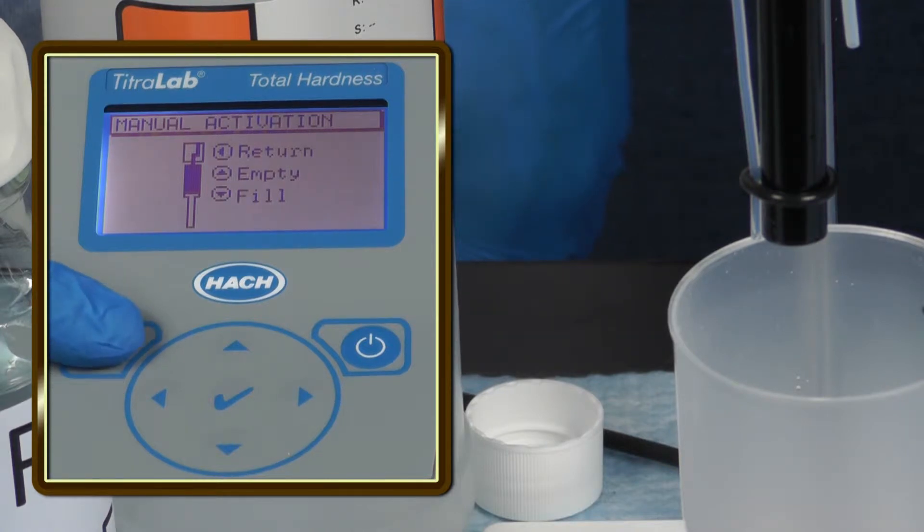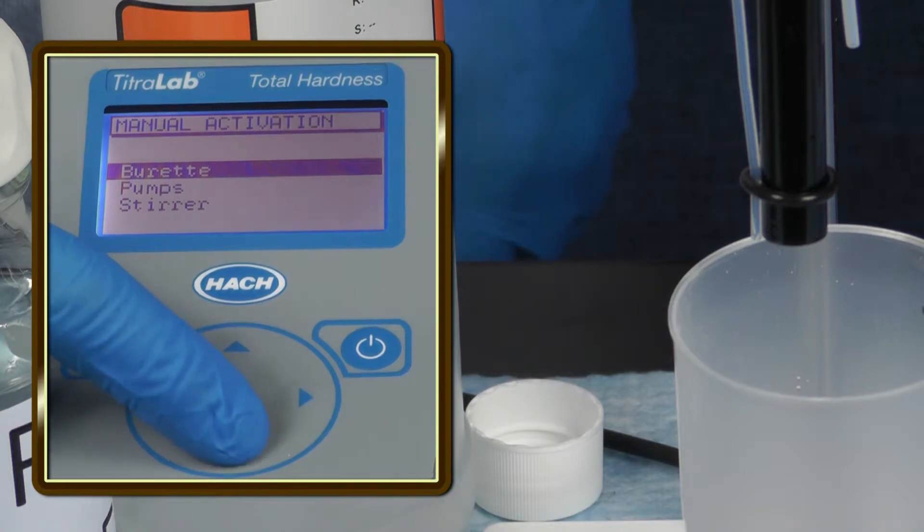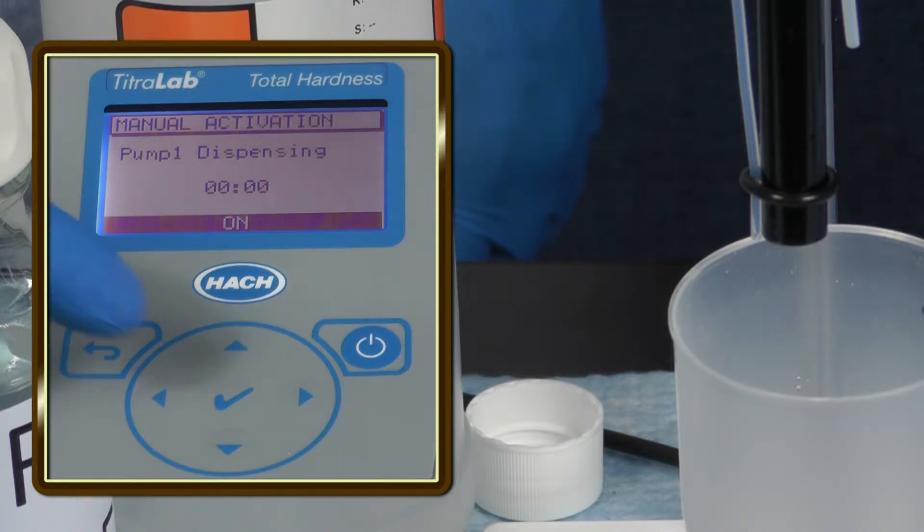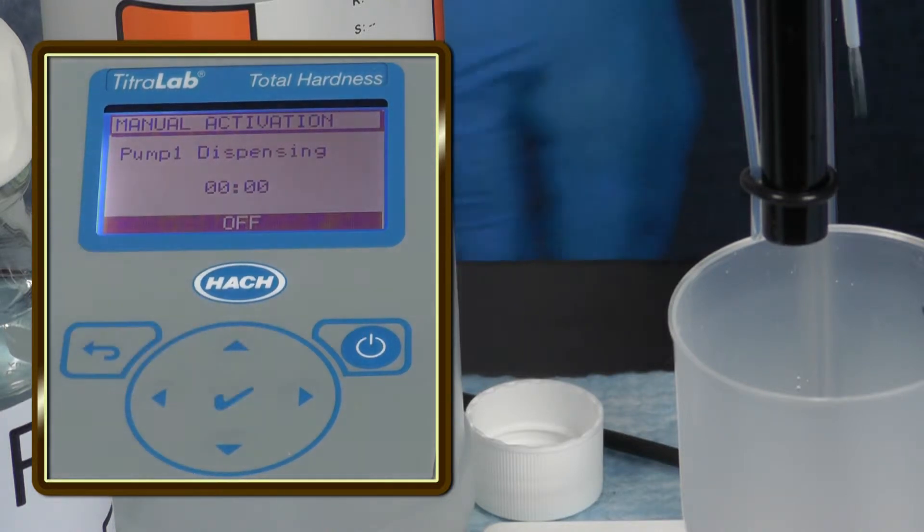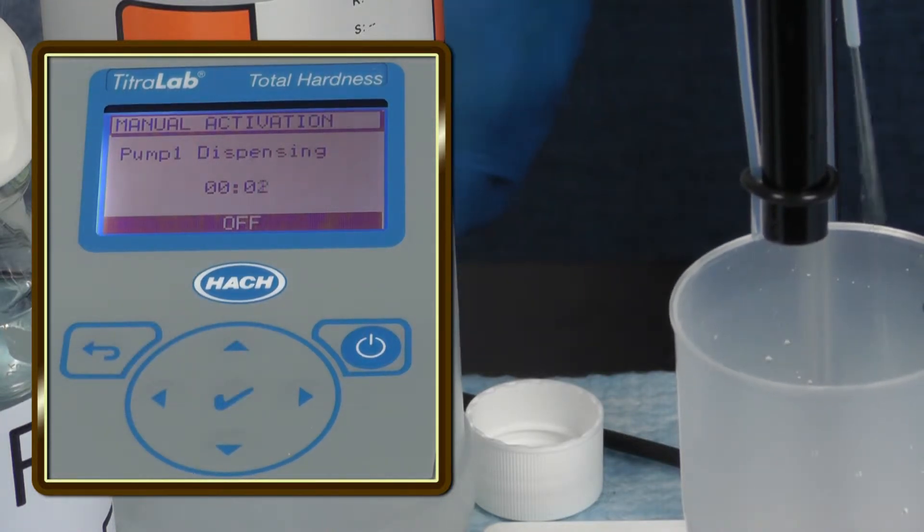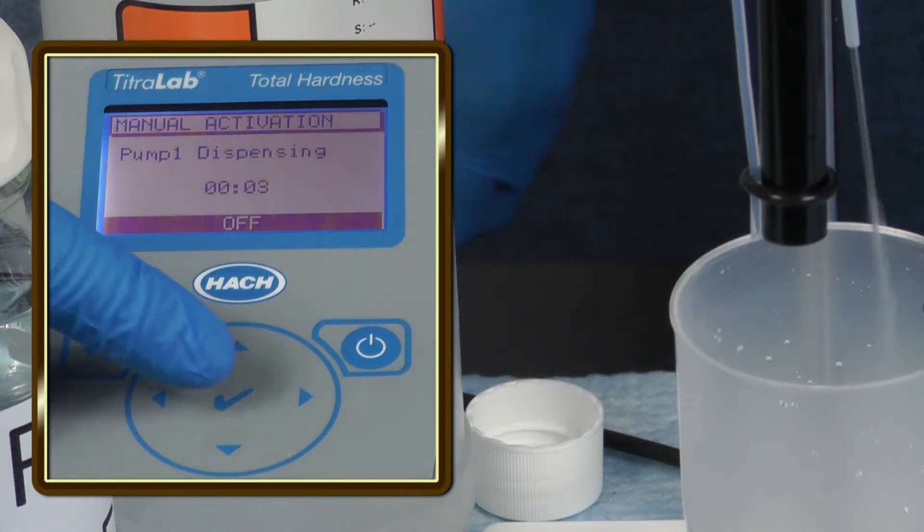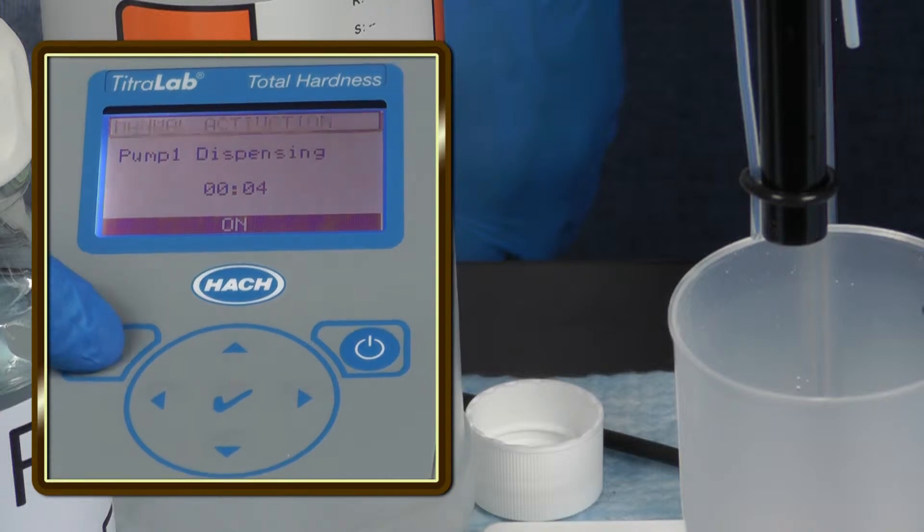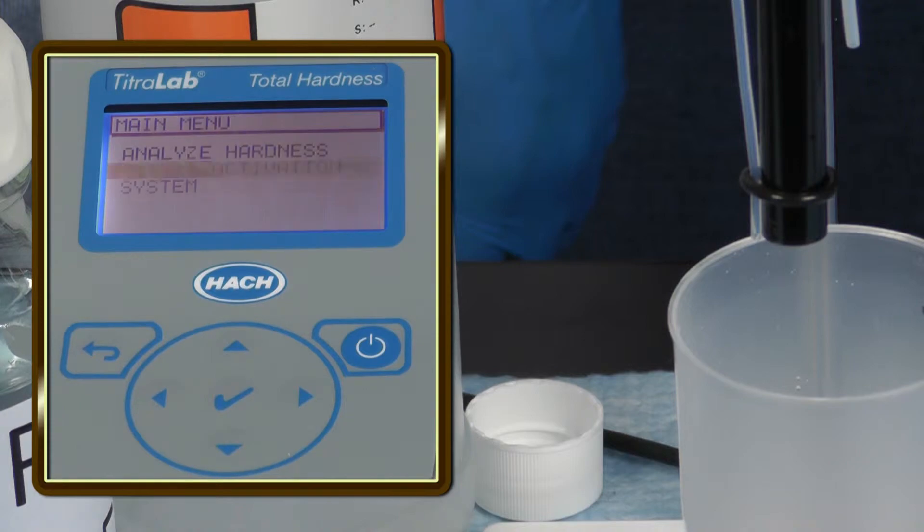Press the pump to prime the pump for the tris buffer on the keypad. Scroll to pumps. Make sure there is a waste beaker under the electrode. Press the check button and let the pump run for four to eight seconds and press the check key again to turn off the pump. Press the return button twice to return to the main menu.